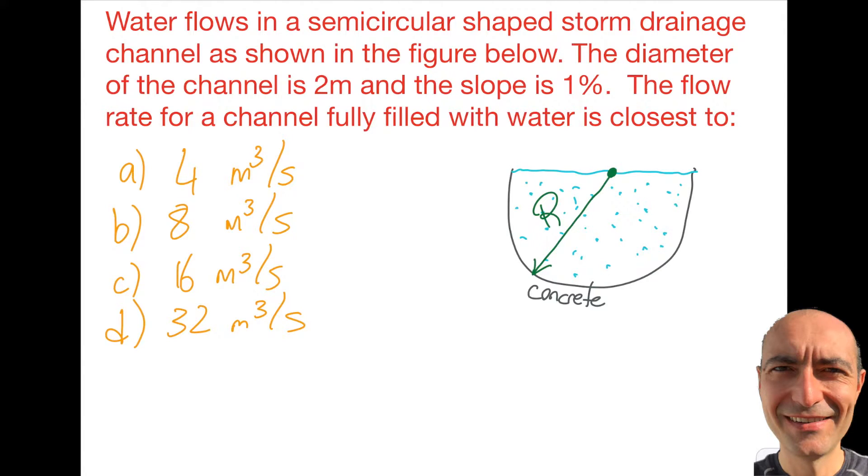The diameter is 2 meters, not radius, so this is 1 meter over here, and the slope is 1%. The flow rate for a channel fully filled with water is closest to what value? That is the question I'm trying to assess.